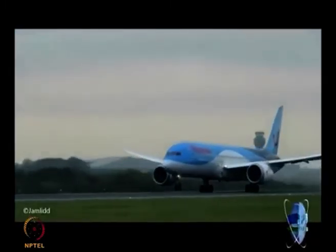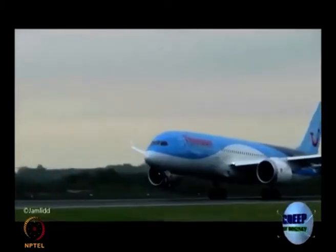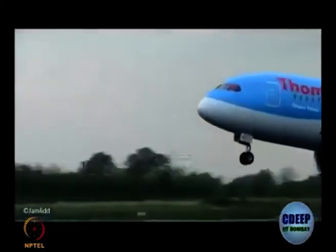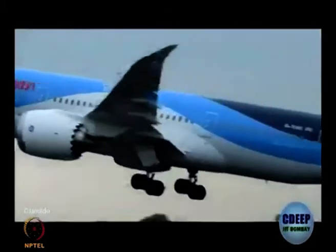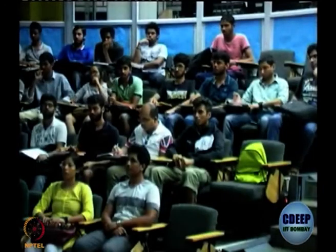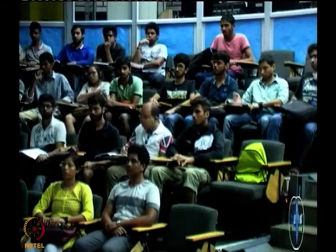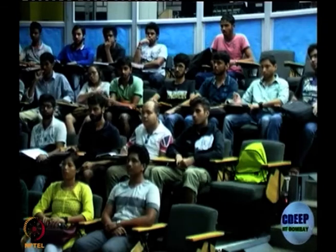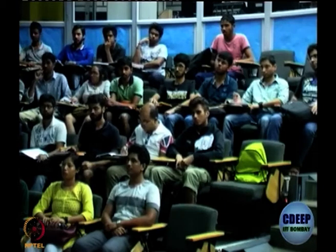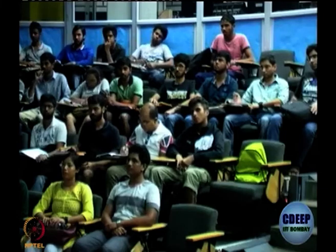I would like you to identify the aircraft by looking at its features. It is a very distinctive aircraft. The nose and wings are not so distinctive because many aircraft look like this, but the chevrons on the nozzle are a giveaway. This is the Boeing 787 Dreamliner.